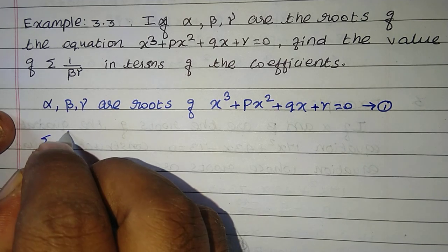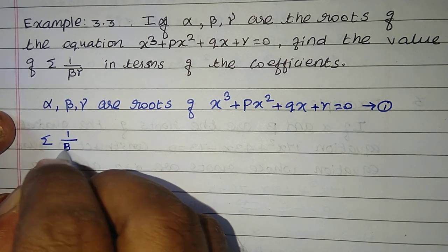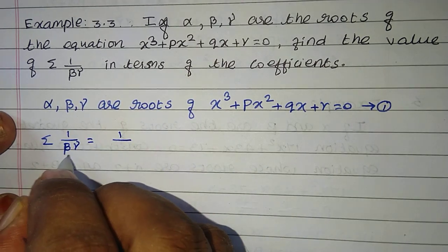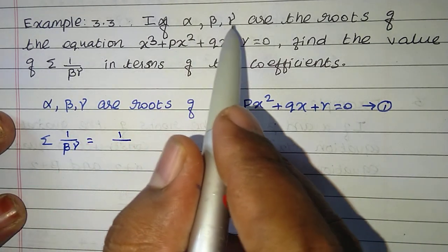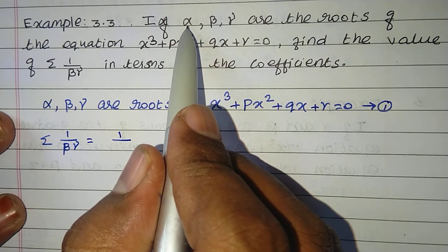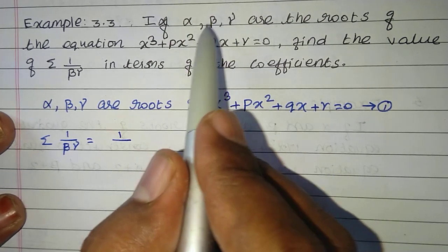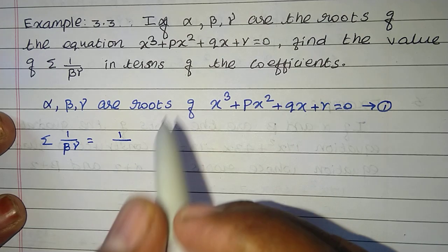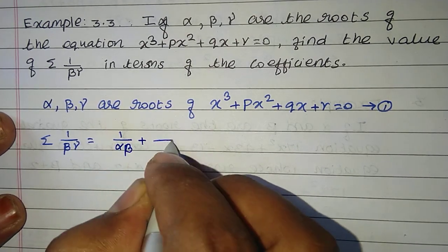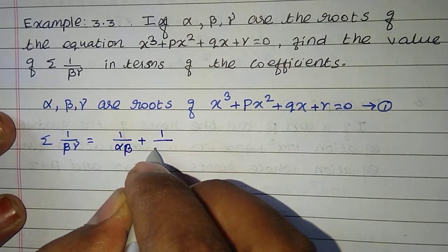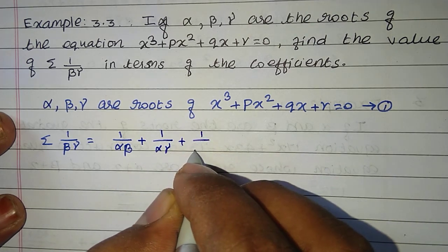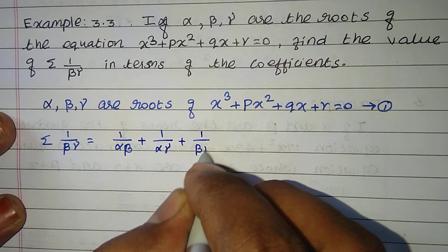Summation 1 by beta gamma — what do we mean? These are reciprocals of products of 2 roots: 1 by alpha beta, 1 by alpha gamma, 1 by beta gamma.